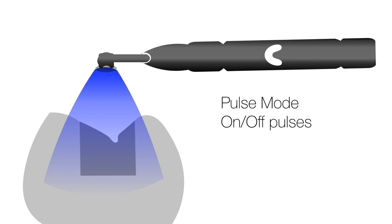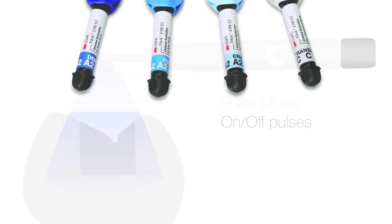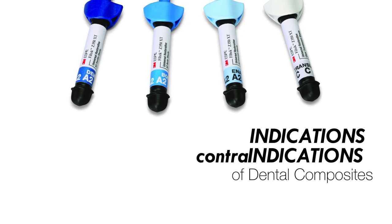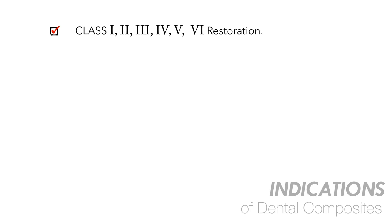Moving to indications and contraindications of dental composites: in modern dentistry, composite is the gold standard material. Indications include Class I — posterior surfaces of molars; Class II — proximal surfaces of posterior teeth; Class III — proximal surfaces of anteriors; Class IV — proximal and incisal surfaces of anteriors; Class V — cervical area of posteriors and anteriors; and Class VI — cusp tips of anteriors and posteriors.